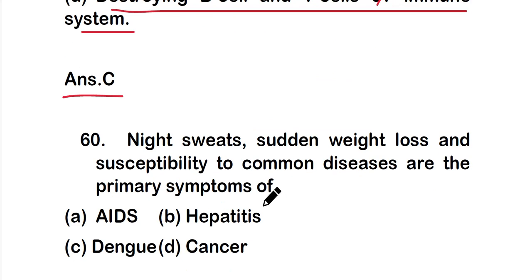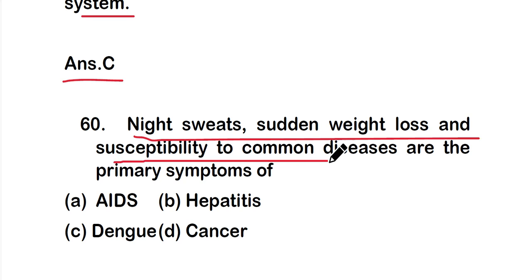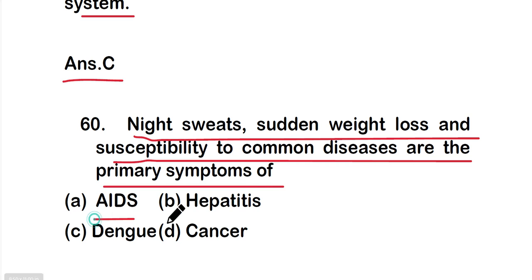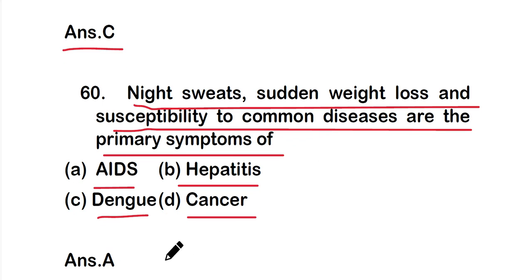Question 60: Night sweats, sudden weight loss, and susceptibility to common diseases are the primary symptoms of option A AIDS, option B hepatitis, option C dengue, or option D cancer. The right answer is option A — these are the primary symptoms of AIDS. These are all 20 questions of part 3 of this video series on immunology. Thank you for watching.